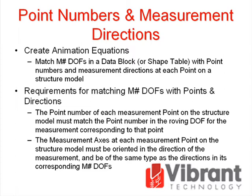The easiest way to create animation equations is to match measurement number DOFs in a DataBlock or Shape Table with point numbers and measurement directions at each point on a structure model. This is done by executing one of the Assign Measurement Numbers commands. There are two requirements for matching measurement number DOFs with points and directions on the structure model. First, the point number of each measurement point on the structure model must match the point number in the roving DOF for the measurement corresponding to that point. Secondly, the measurement axes at each measurement point on the structure model must be oriented in the direction of measurement and be of the same type as the directions in the corresponding measurement number DOFs.